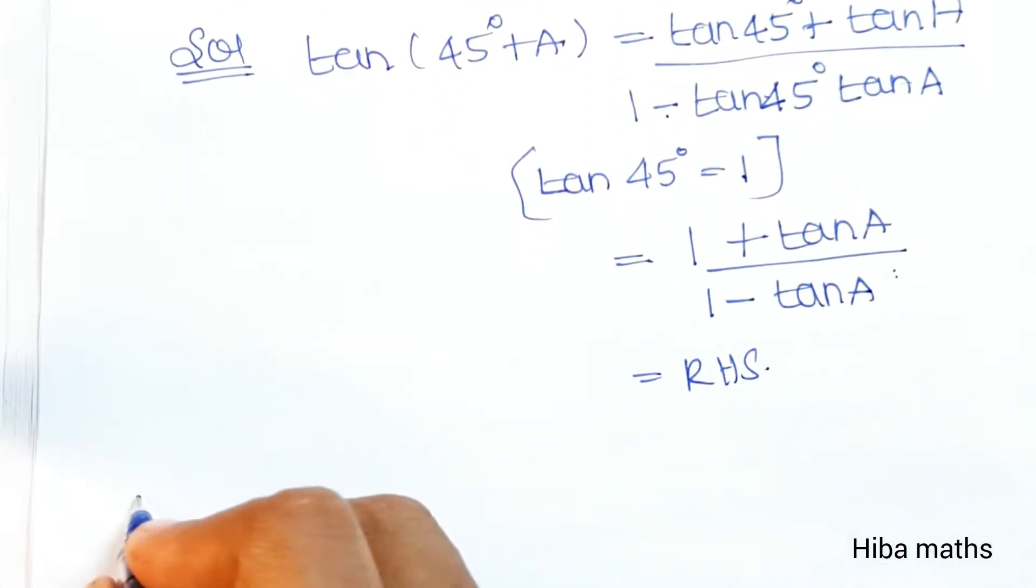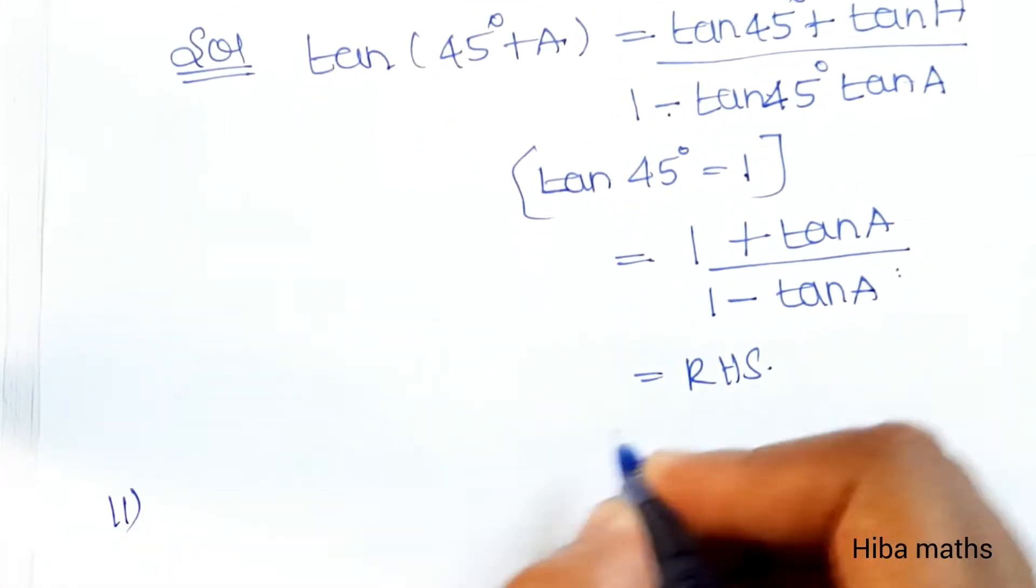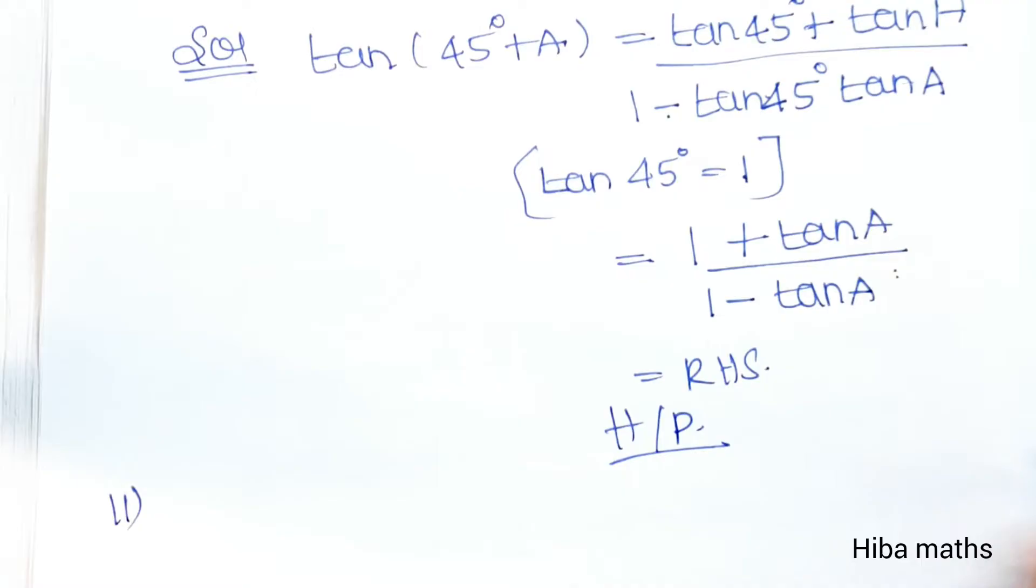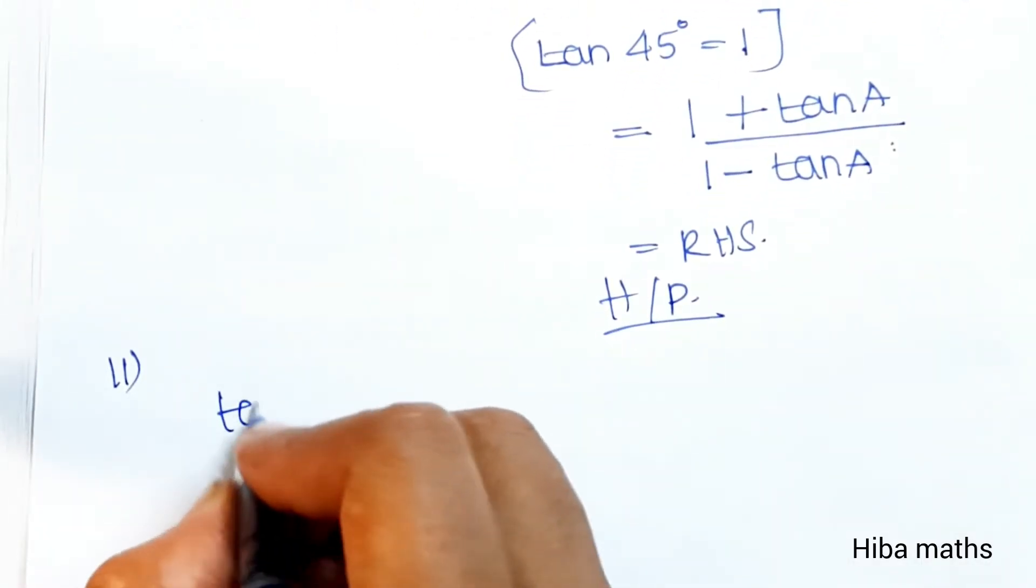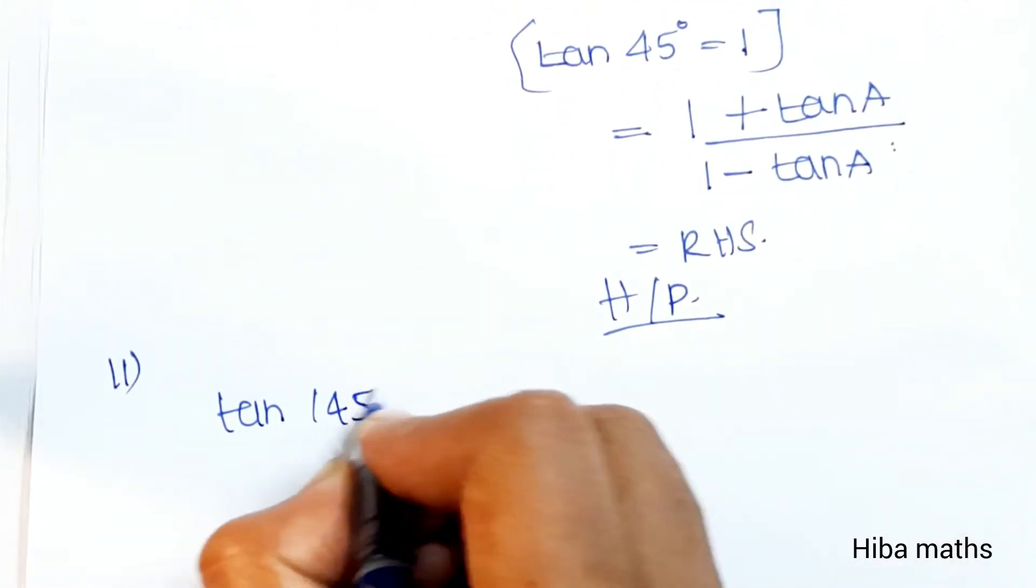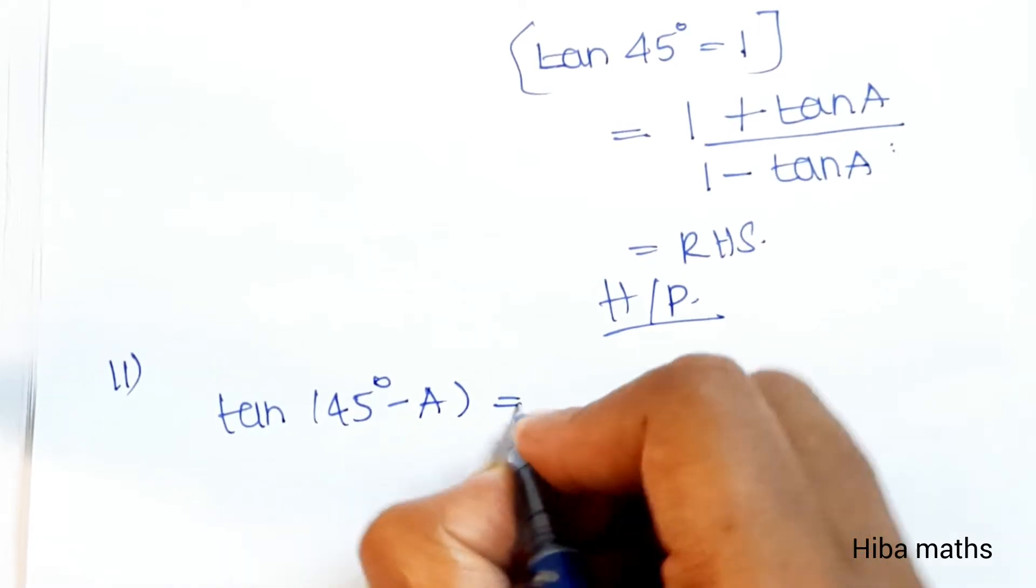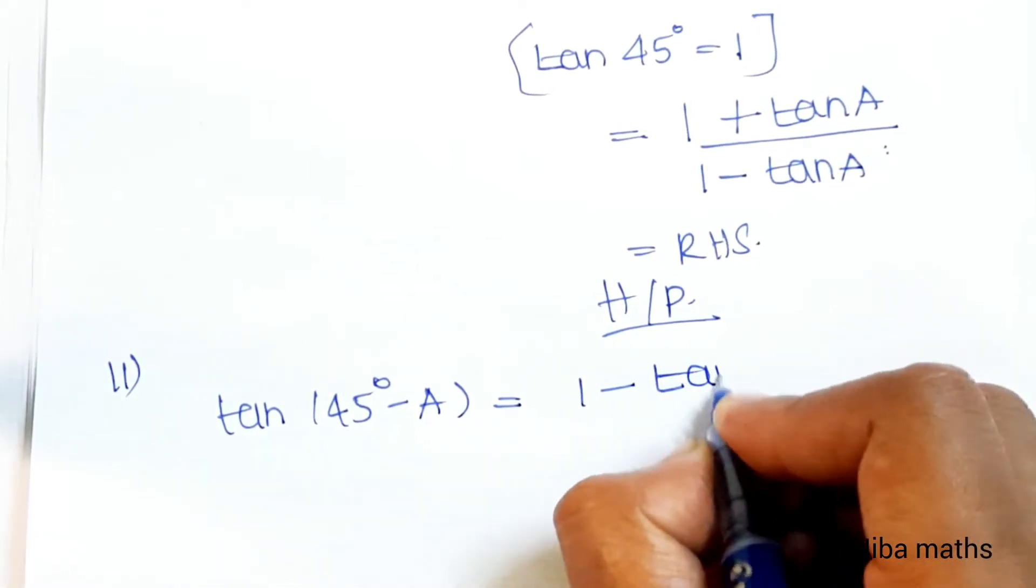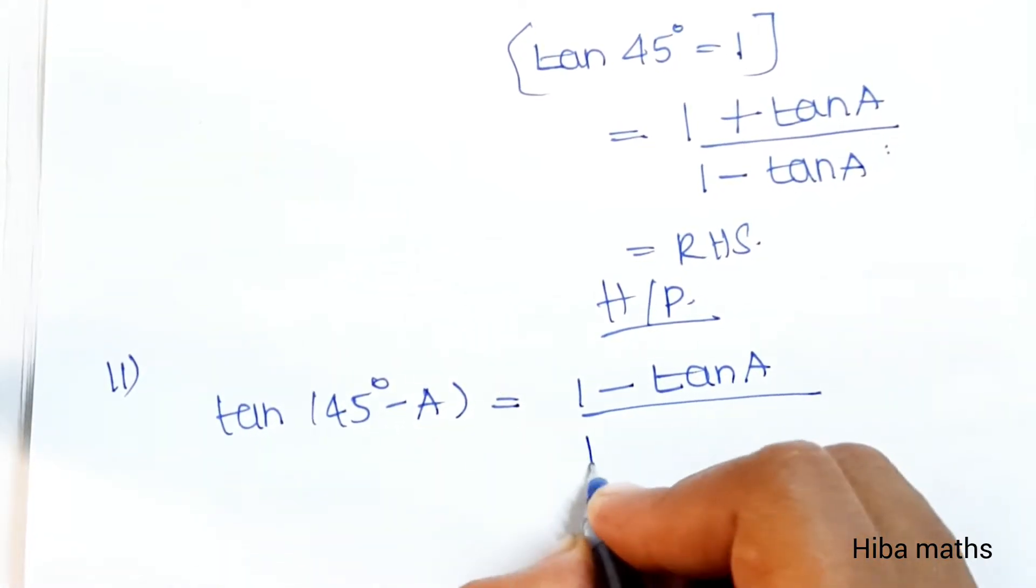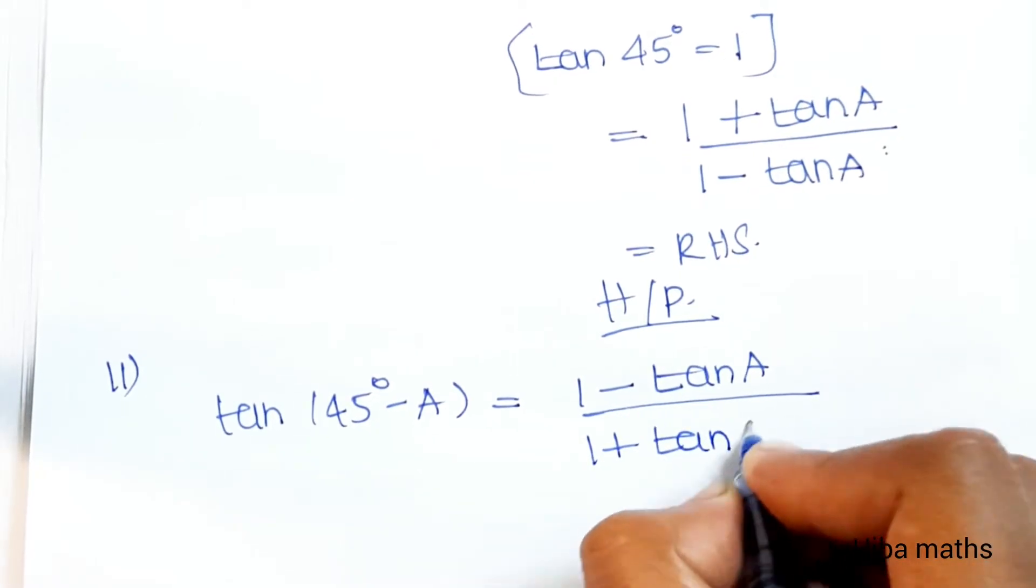Second subdivision: Hence prove tan(45° - A) is equal to (1 - tanA) divided by (1 + tanA).